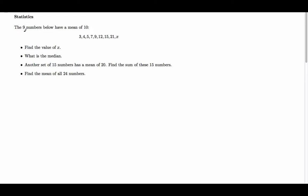In this example, we're told that the nine numbers below have a mean value of 10. So we have 3, 4, 5, 7, 9, 12, 15, 21, and some unknown value x.